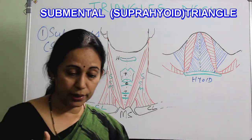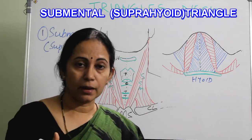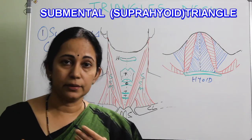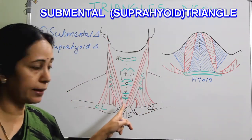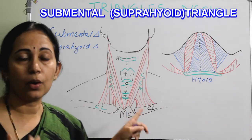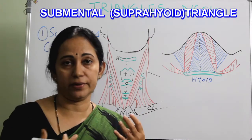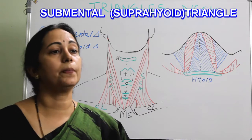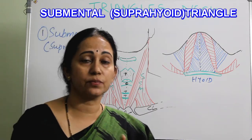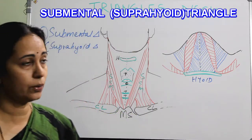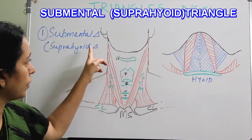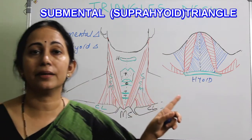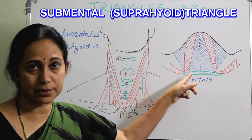Before discussing boundaries, note that all triangles are paired because there is a midline — they are right and left. But for the submental triangle, for all practical purposes we take it as an unpaired one. It is the only unpaired triangle in the neck.